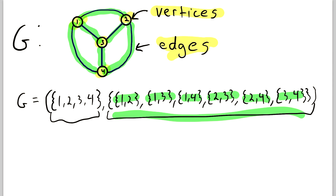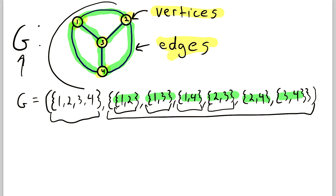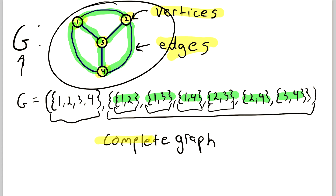This graph G is an example of a complete graph because every pair of vertices is joined by an edge. If in a graph every pair of vertices is joined by an edge, we call it a complete graph. But I'll talk more about those in a different lesson.